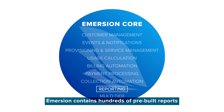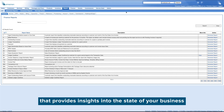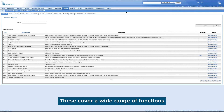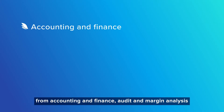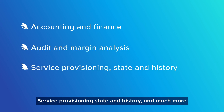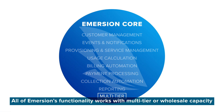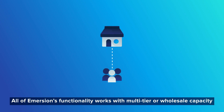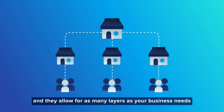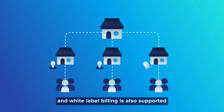Reporting: Immersion contains hundreds of pre-built reports that provide insights into the state of your business. These cover a wide range of functions from accounting and finance, audit and margin analysis, service provisioning state and history, and much more. Multi-tier functionality: all of Immersion's functionality works with multi-tier or wholesale capacity, and they allow for as many layers as your business needs. Agents and commissions functionality and white label billing are also supported.